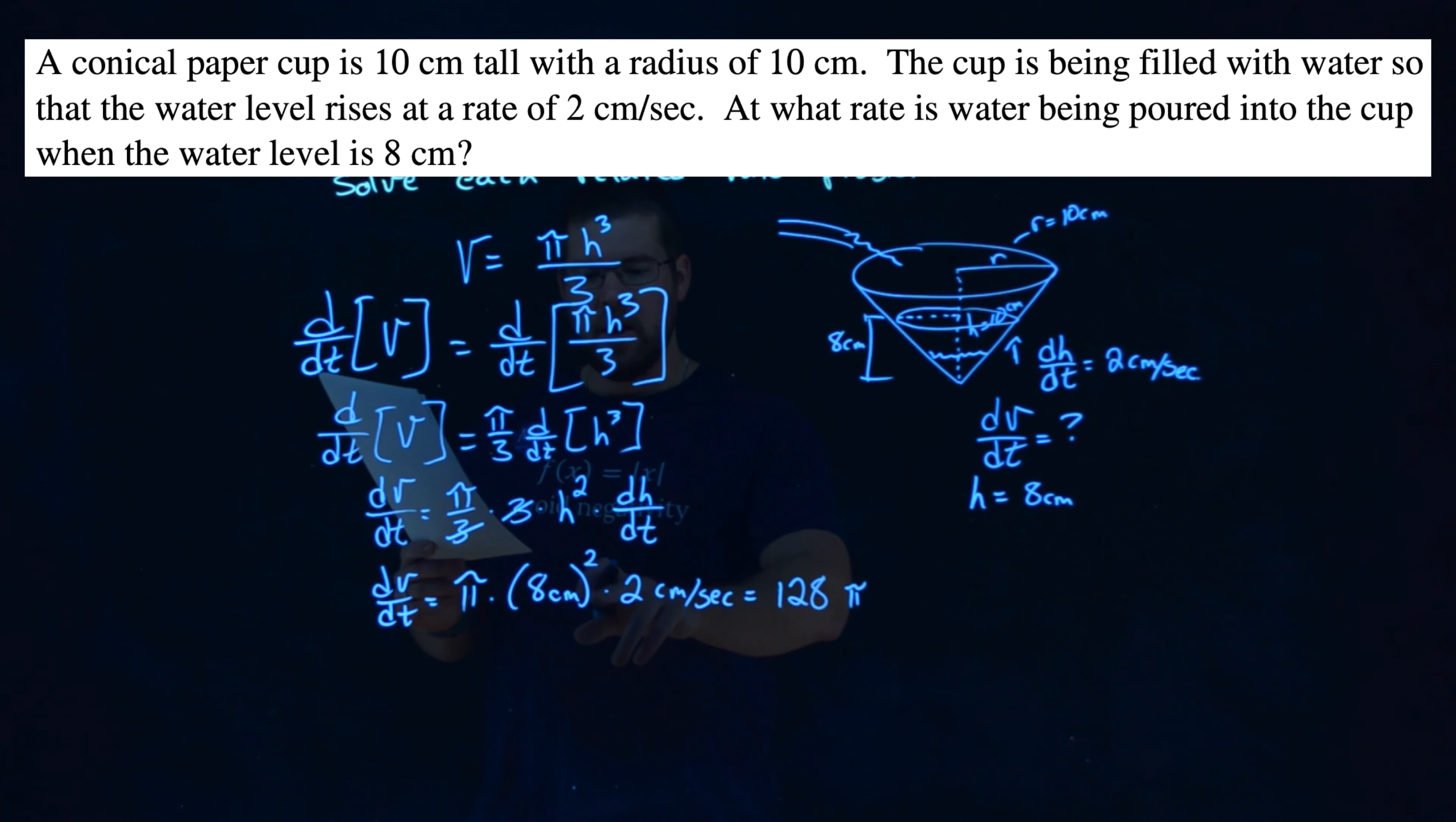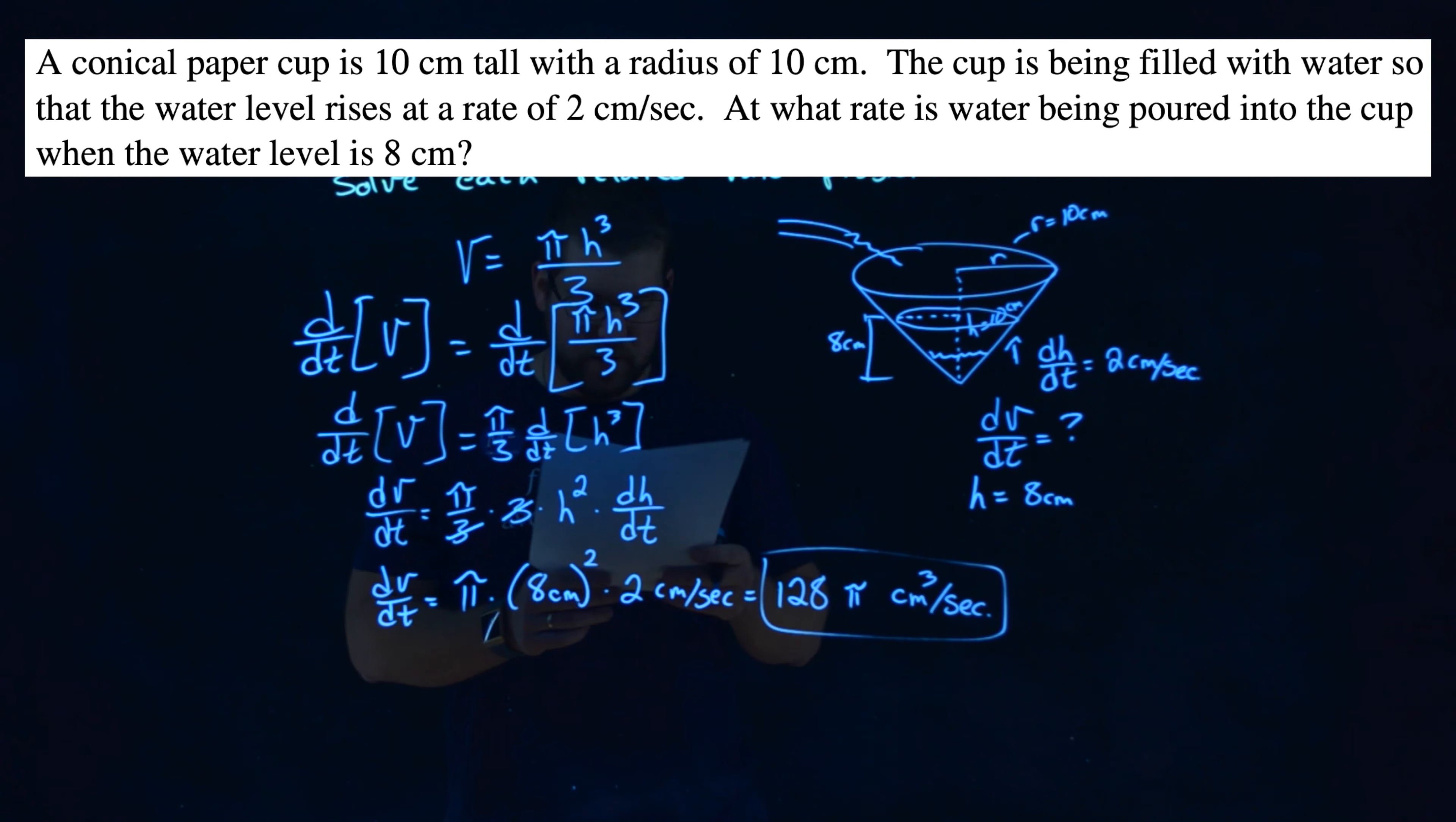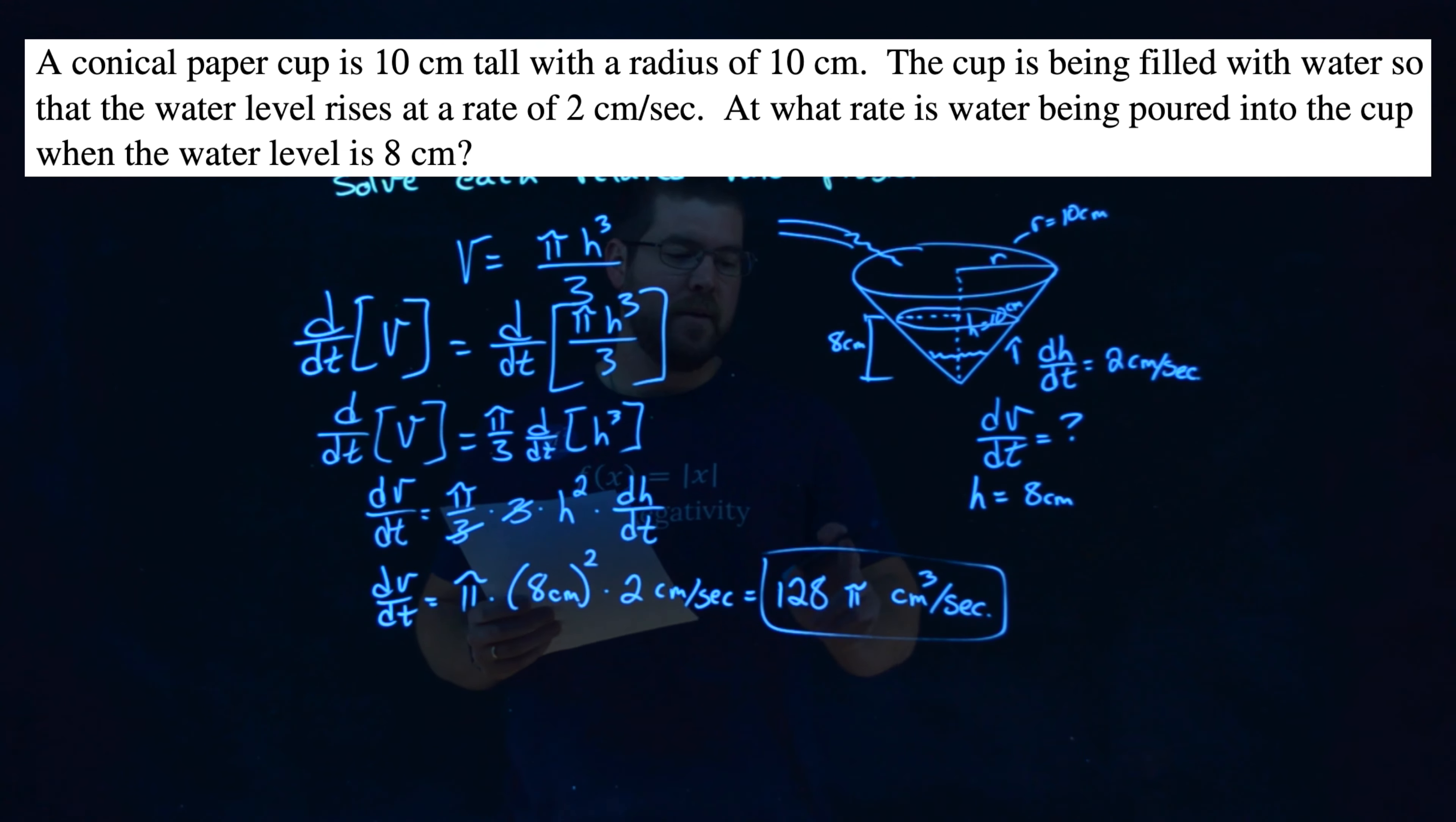And our units here, well, we have centimeters squared times another centimeters. That's centimeters cubed per second, which makes sense because we're talking about the rate of a volume changing and should be centimeter cubes per second. And so here, our final answer, at what rate is the water being poured into the cup when the water level is 8 centimeters, is 128 pi centimeters cubed per second.